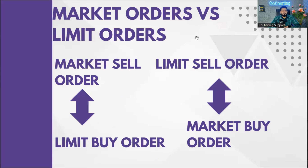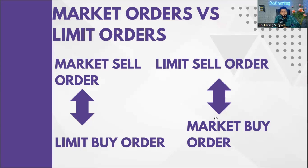Market sell orders are always fulfilled by limit buy orders, and limit sell orders are always fulfilled by market buy orders. There is always a two-way auction in the market — not just buyers and sellers, but always some limit buyers and limit sellers, and against those there will be market buyers and market sellers. Against the limit buy order we have a market sell order, and against the limit sell order we have a market buyer.